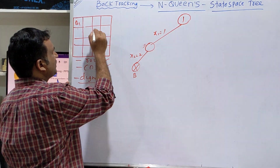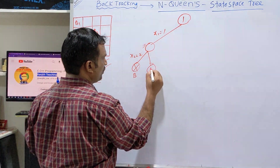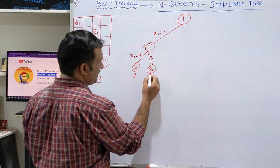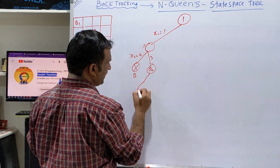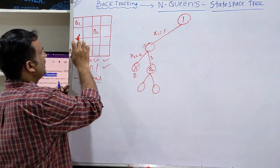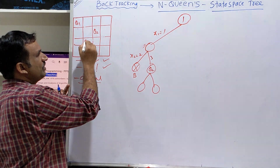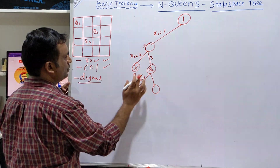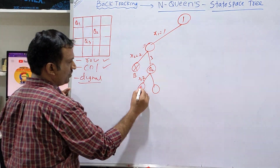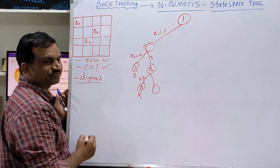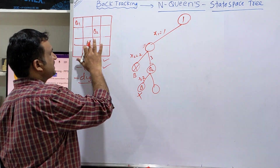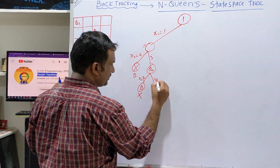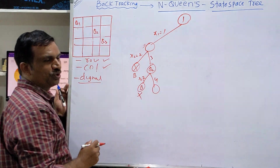Can you place queen 2 here? Yes. Queen 2 in the third position. Once again, what can be done? Two more possibilities. Queen 3 — can you place it here? Same column. No. Can you place it here? x3 equal to 2. No. Backtrack. Can you place it here? Same column. Can you place queen 3 in the 4th position? No. Backtrack.